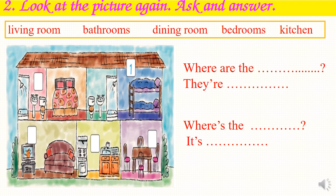Look at the picture again, ask and answer. You have to look at the pictures and use the room names in the box with two WH questions: 'where are' and 'where's'. You use 'where are' when you want to ask the place of two things, two persons or more. You use 'where's' when you want to ask the place of one thing or one person, and the answer uses 'they are' or 'it's'.